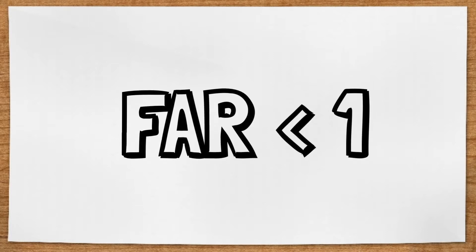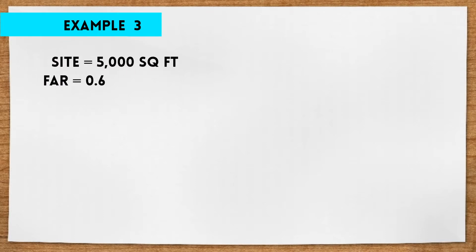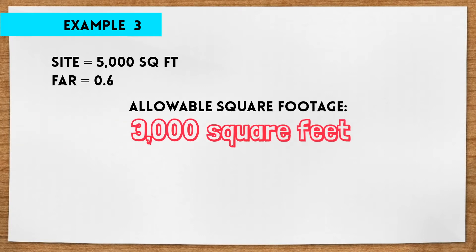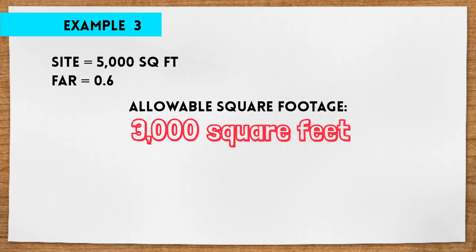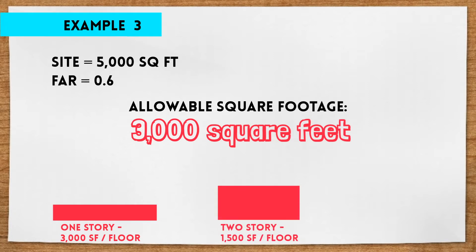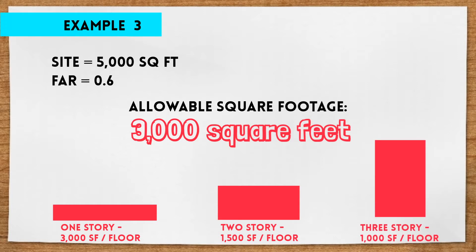You might be thinking, what if the FAR is less than one? Let's say our site is 5,000 square feet and the FAR is 0.6. That means the owner is allowed to build a structure that's 3,000 square feet, because 5,000 times 0.6 is 3,000. That could be a one-story structure that's 3,000 square feet, or a two-story structure that's 1,500 square feet per floor, or a three-story structure that's 1,000 square feet per floor.